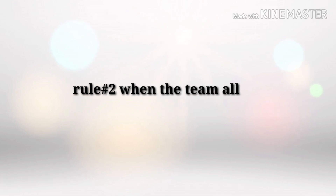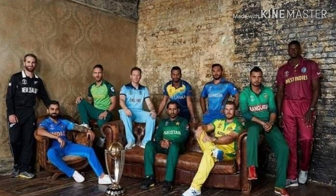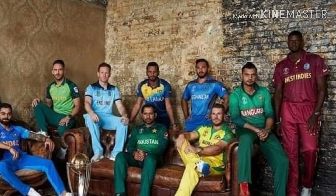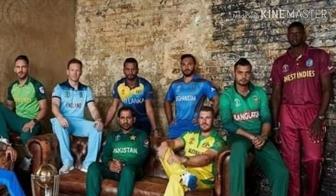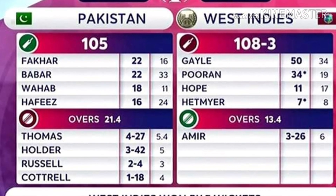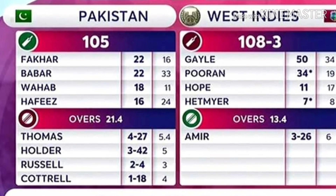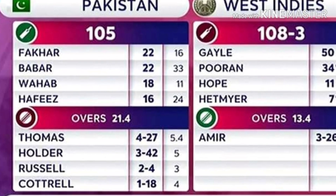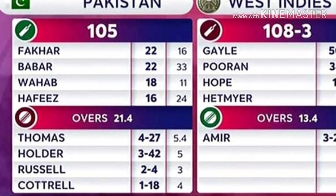In the second type of match, if a team gets all out in fewer overs than allotted to them, it is considered in Net Run Rate that the team has played all the overs allotted to them in that innings. The average is taken as the score divided by the total overs allotted in the innings.